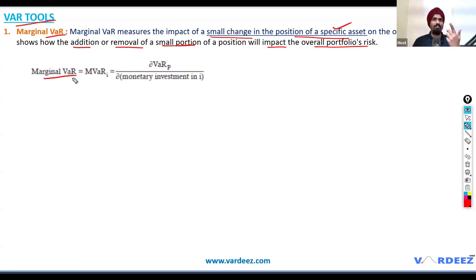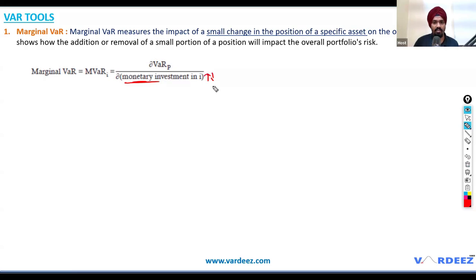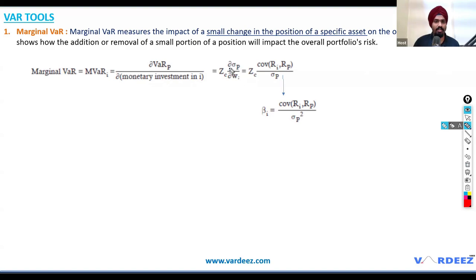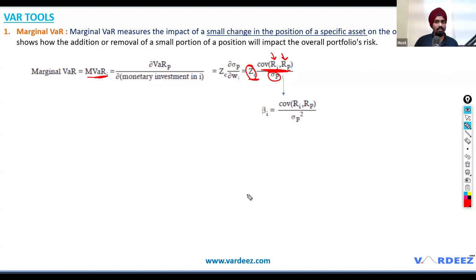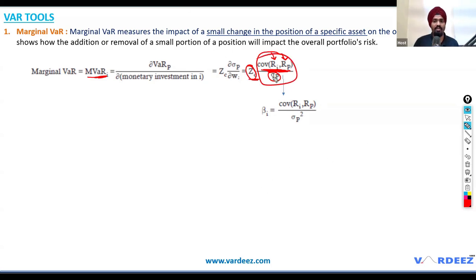Marginal VAR: small change in investment in one company like TCS, and how does portfolio VAR change? The formula is: marginal VAR equals Z critical value times the covariance between the asset and the portfolio, divided by the standard deviation of the portfolio. This can also be expressed using beta — covariance divided by the portfolio variance.